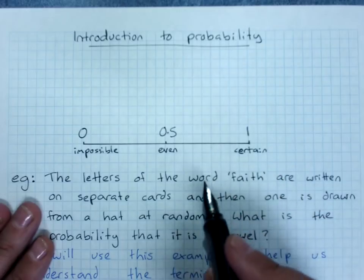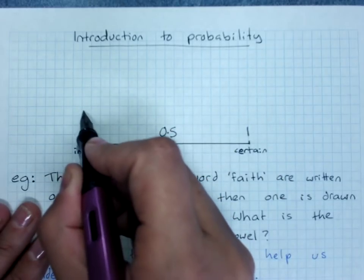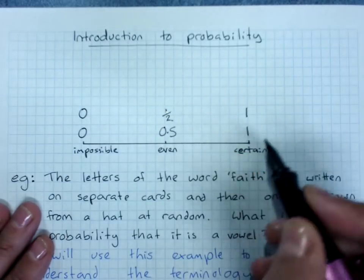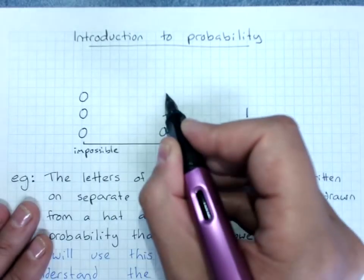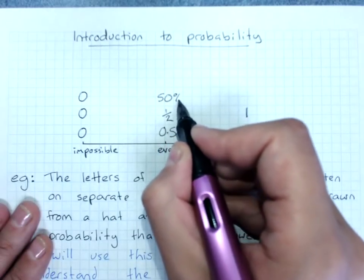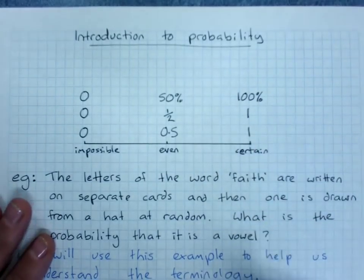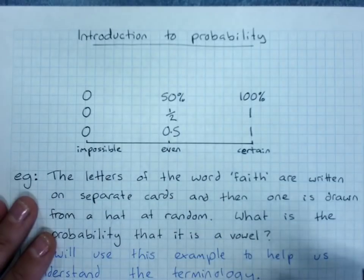Now these can also be given as a fraction - zero, one-half, one - and it can be given as a percentage - zero, 50%, 100% - and they all mean the same thing. But I'm usually quite happy if you give your probability as a fraction.